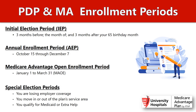There are also important enrollment periods to be aware of. The Initial Election Period is three months before and three months after your 65th birthday. The Annual Enrollment Period runs from October 15th to December 7th for a January 1st effective date. The Medicare Advantage Open Enrollment Period allows those with a Medicare Advantage Plan to change their plan from January 1st to March 31st. Special Election Periods apply if you're losing employer coverage, moving in or out of the plan's area, or qualifying for Medicaid or Extra Help.